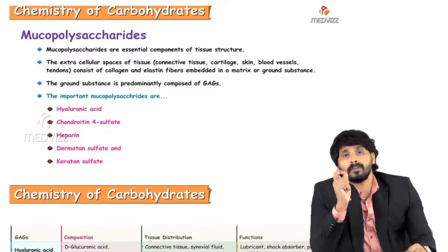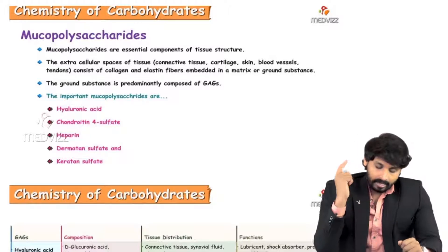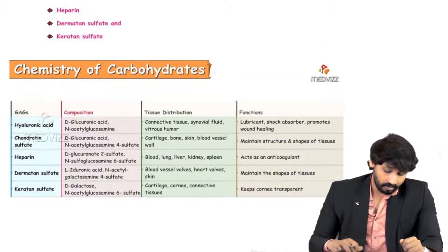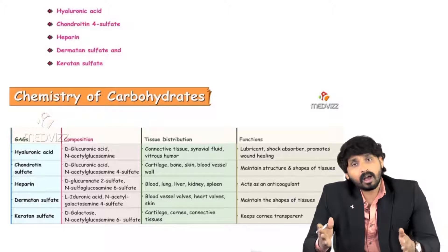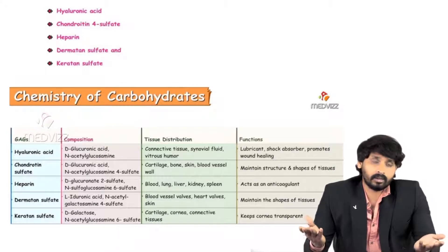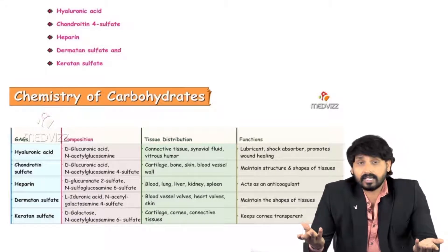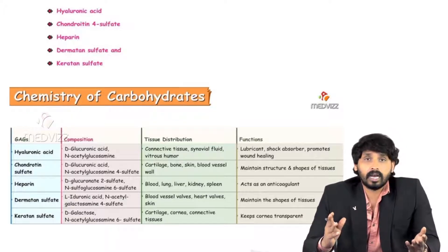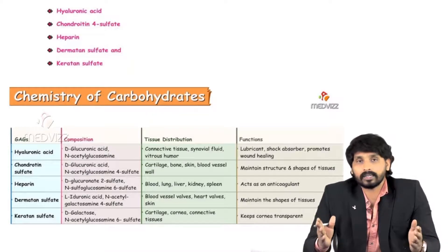The main important mucopolysaccharides to learn are hyaluronic acid, chondroitin 4-sulfate, heparin, dermatan sulfate, and keratan sulfate. We will look at the locations of these GAGs. Heteropolysaccharides or mucopolysaccharides are GAGs. In exams they may ask using any one of these names — GAGs, heteropolysaccharides, or mucopolysaccharides — but the types are the same.